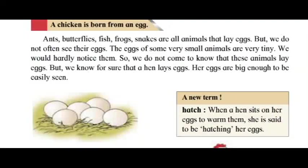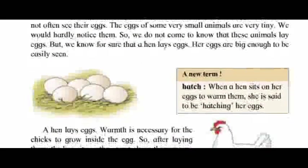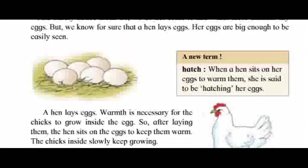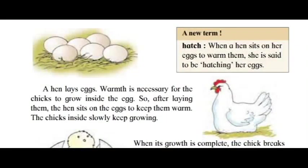We do not often see the eggs of some animals because the eggs of very small animals are very tiny — we would hardly notice them. So we do not come to know that these animals lay eggs. But we know for sure that a hen lays eggs; her eggs are big enough to be easily seen. New term: hatch.